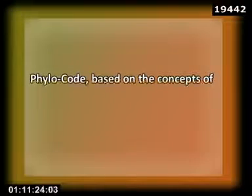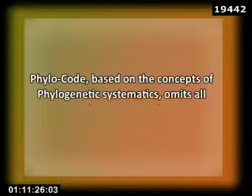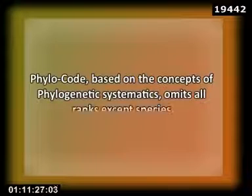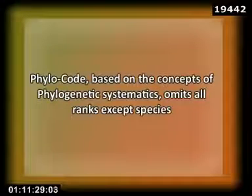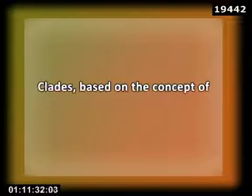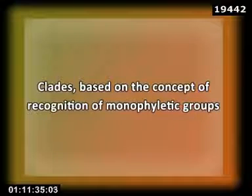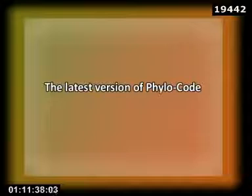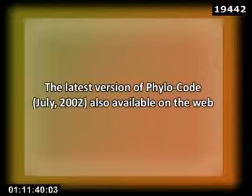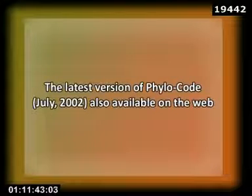The last decade of the 20th century also saw the development of a rankless phylogenetic system. Based on the concept of phylogenetic systematics, it omits all ranks except species and clades. Based on the concept of recognition of monophyletic groups, the latest version of the phylogenetic system is available on the web.